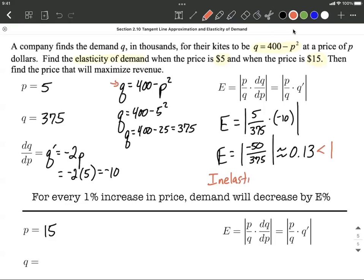Here's how we can interpret it. For every 1% we increase the price, the demand is going to decrease by E percent. So for every 1% we increase our price, the demand's only going to decrease by 0.13%. Because revenue is price times quantity, price times demand, if we're increasing by 1 but decreasing by less than 1, that tells us we want to raise prices if our goal is to increase our demand.